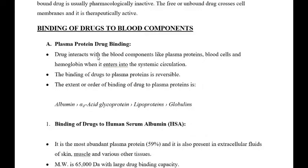Now let us discuss the binding of drugs to blood components. Number one is plasma protein drug binding. The drug interacts with blood components like plasma proteins, blood cells, and hemoglobin when it enters into the systemic circulation. The binding of drug to plasma protein is reversible. The extent or order of binding of drug to plasma proteins is: albumin, alpha-1 acid glycoproteins, lipoproteins, and globulins.